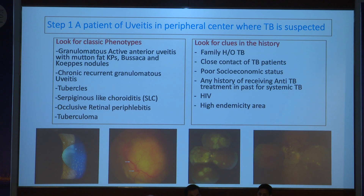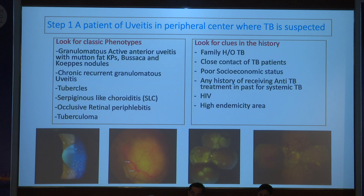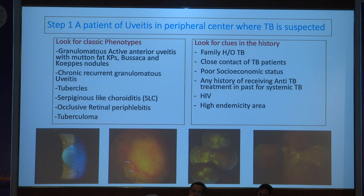Common questions in history for ocular TB include family history of TB, close contact with TB, and socioeconomic status. Ask about any history of receiving anti-TB therapy in the past, not only for the eye but also for any systemic focus elsewhere in the body. HIV and TB form an important association. Consider endemicity: India is a highly endemic country, as is the Middle East, and TB is emerging in many other countries including developed European countries.